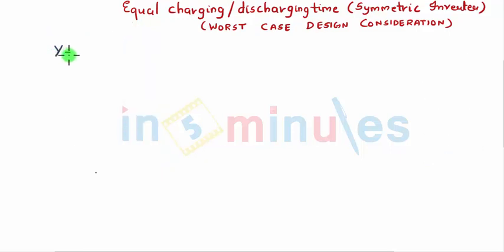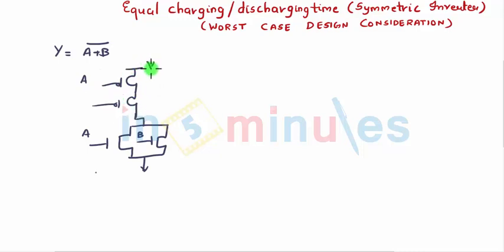So NOR we know is given by y equal to a plus b the whole bar. Hide the bar, whatever is below the bar becomes my pulldown, so this is a parallel to b, this is ground. Series a in series with b, this is my VDD ground and this is my VOUT.